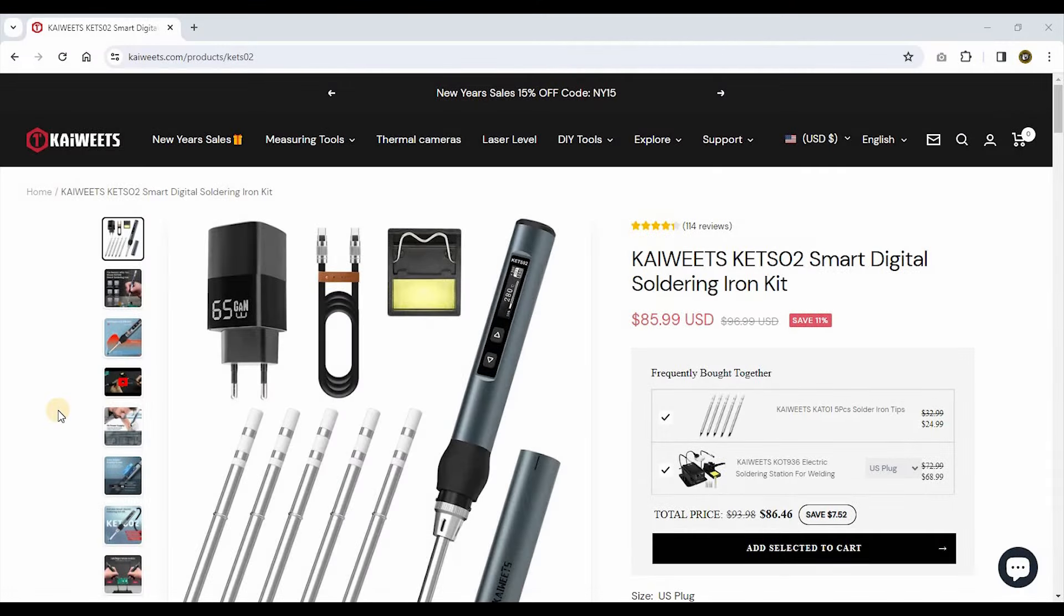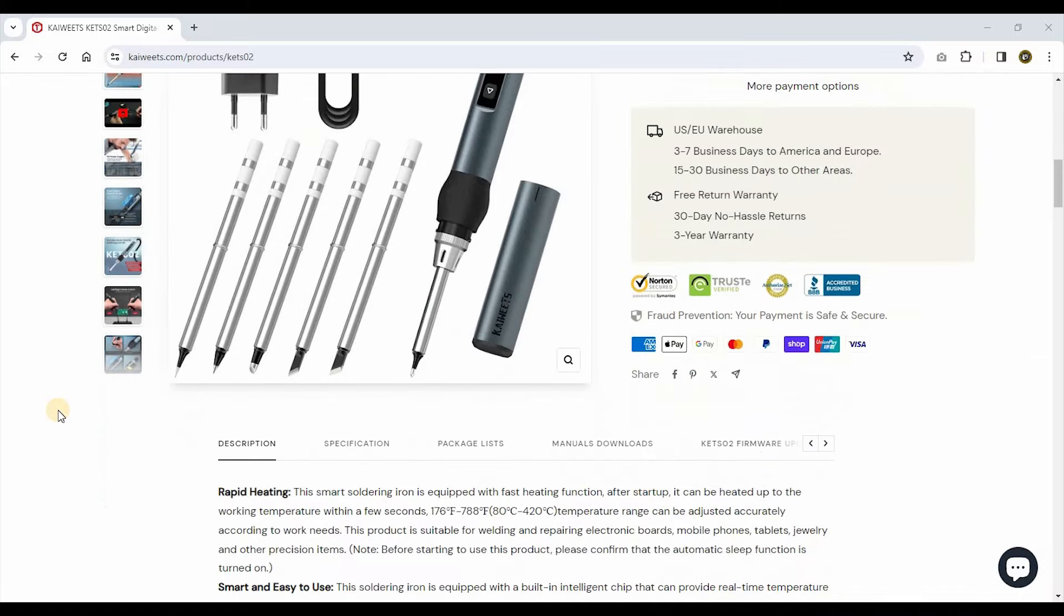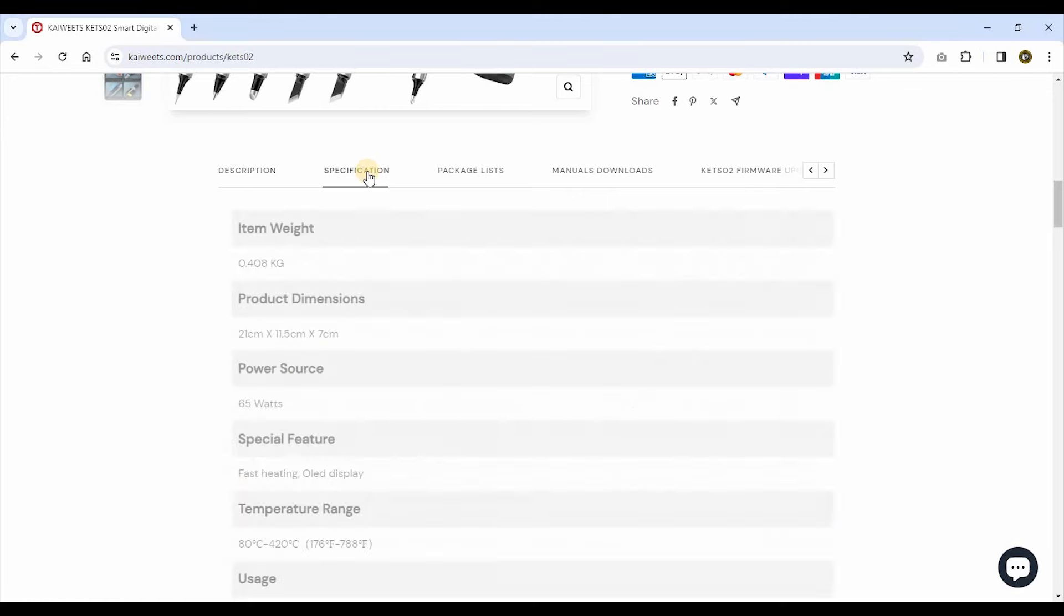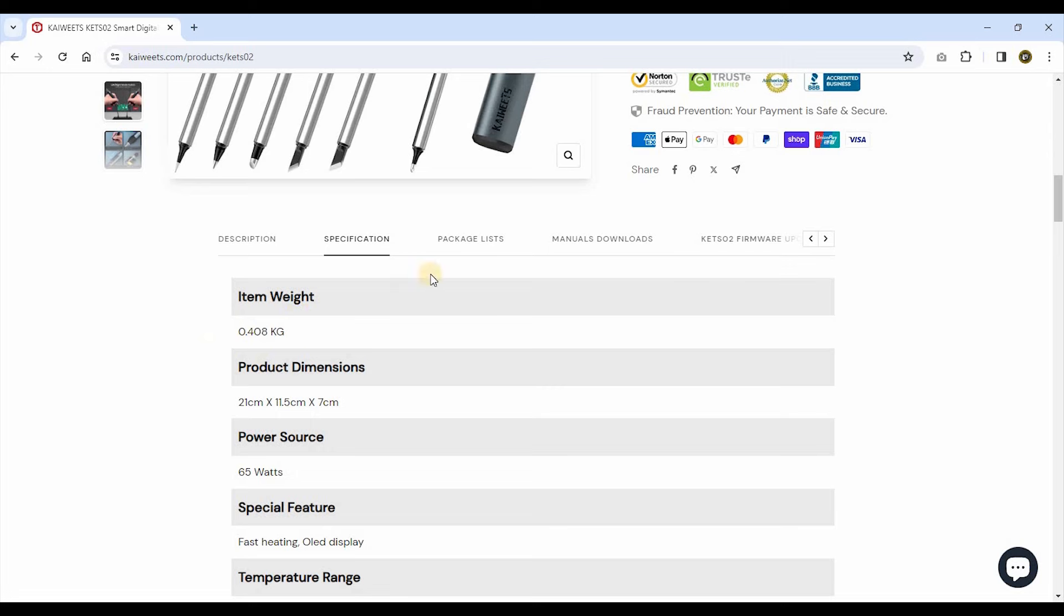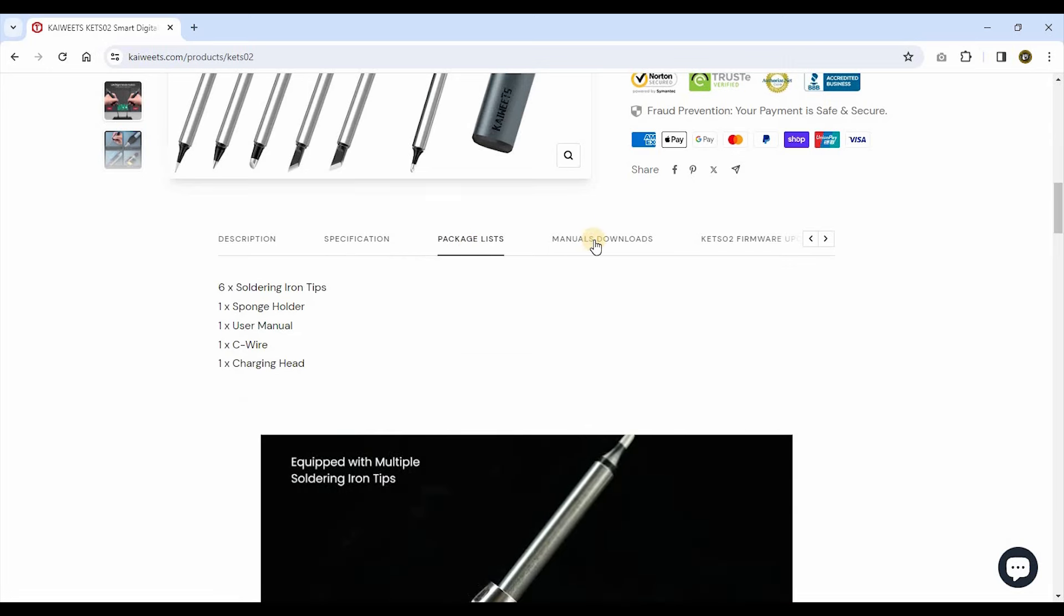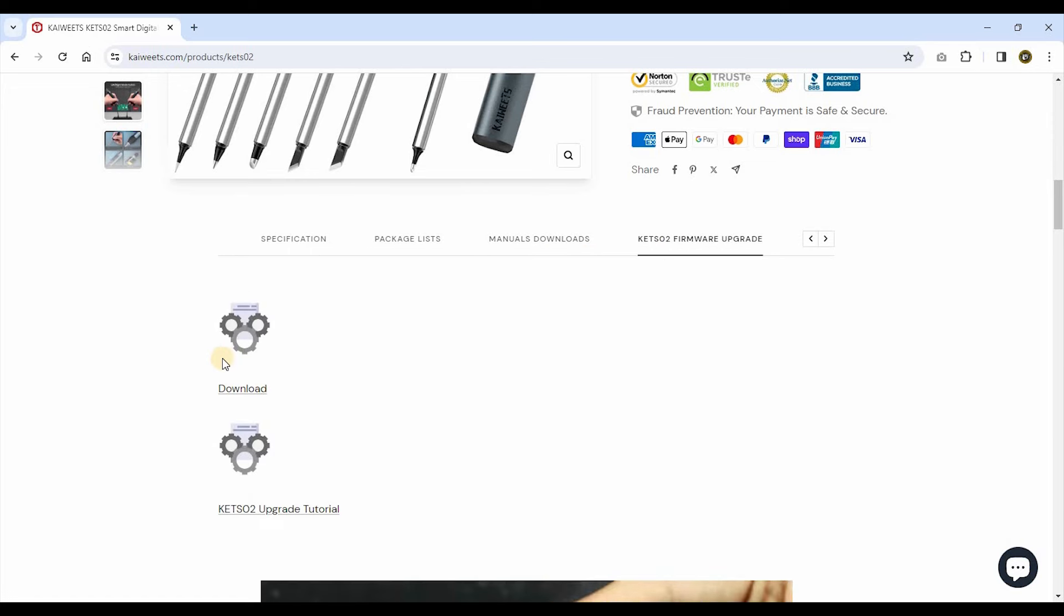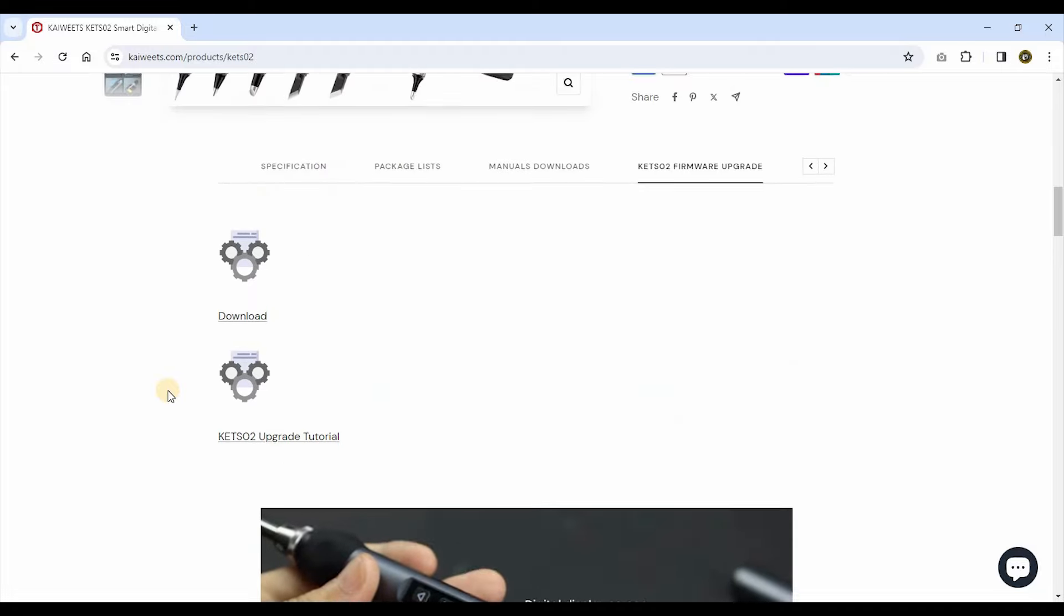Okay, so here we are on the product page on the Kiwitz website. A lot of details on the page. Down below you have the description of the product, product specifications in case you want to double check before you buy it. We have a package list and manuals download, and we also have firmware if you want to update the firmware on the product.